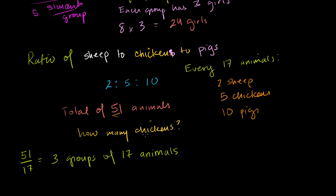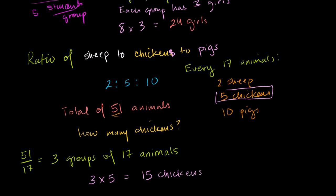Now I want to know how many chickens. Every group has 5 chickens, and I have 3 groups, so 3 times 5 equals 15 chickens. All I did was add up the ratio parts to get 17, found that 51 divided by 17 gives 3 groups, and then multiplied 3 groups by 5 chickens per group to get 15 chickens. You could use the same process to figure out the number of sheep or pigs.